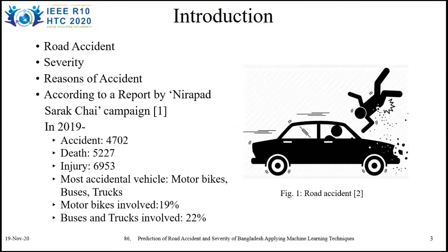Statistics show that at the end of 2019, there were 4,702 deaths and 5,227 injuries. The most common accidental vehicles were motorbikes, trucks, and buses. Motorbikes account for 19%, and buses and trucks account for 22%. Based on all these factors, we were motivated to work in this area of road accidents and work toward a solution that can at least lower the accident rate.